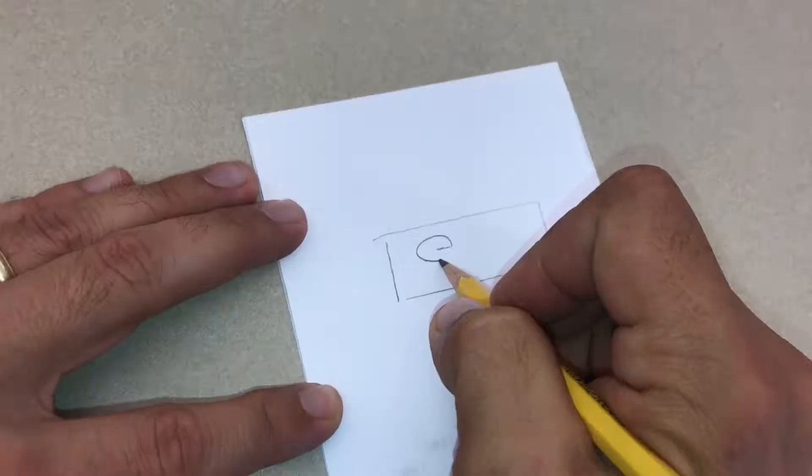To begin with, trace the size of your eraser onto a piece of scrap paper. For your first stamp, I recommend something simple. Here I'm doing my initials.